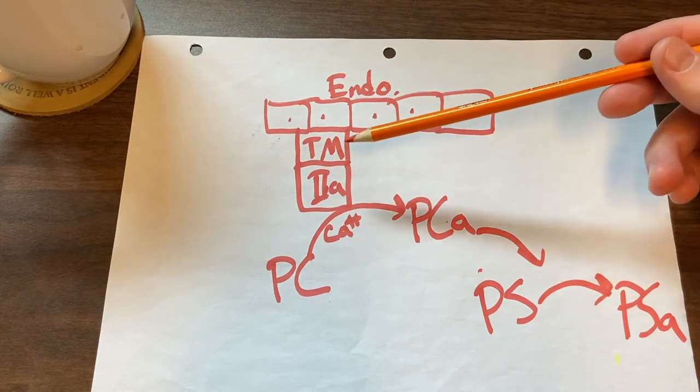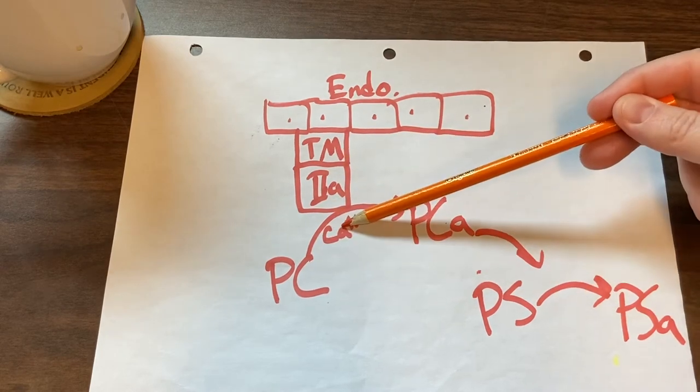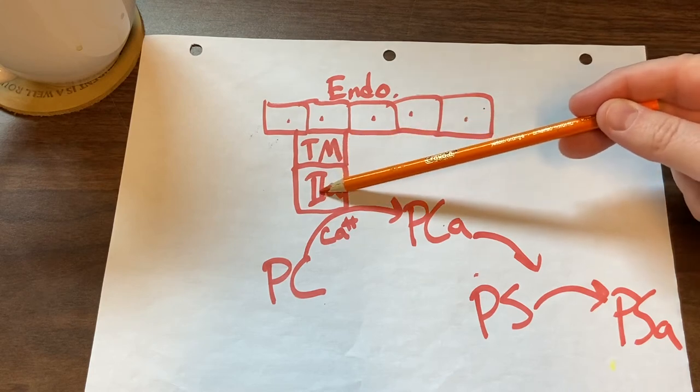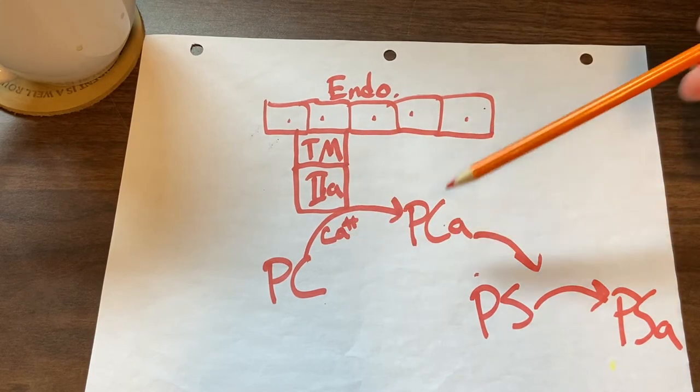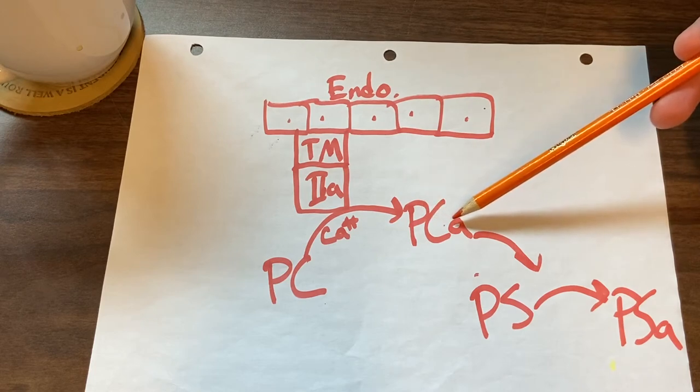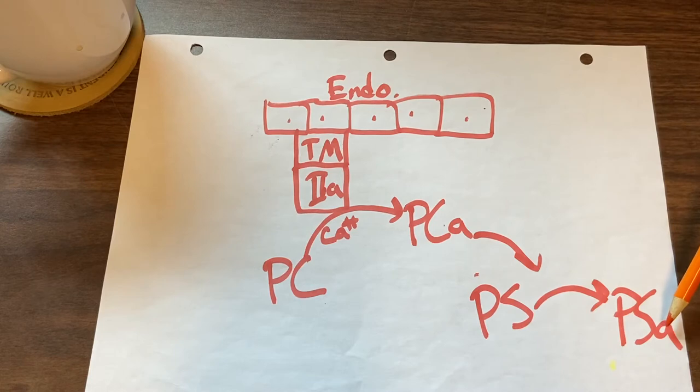This is the protein C and S regulation. Protein C gets activated in the presence of calcium with the tissue modulin and thrombin, and it gets activated to activated protein C. Activated protein C once activated can activate protein S to protein SA, activated protein SA.